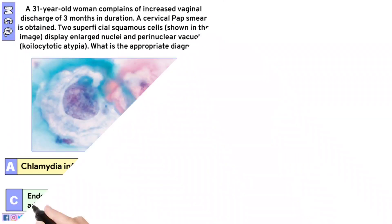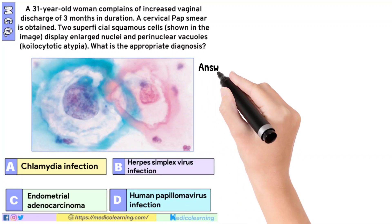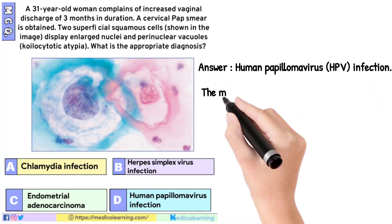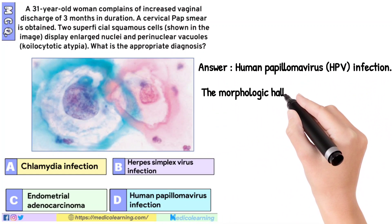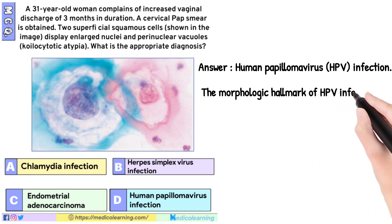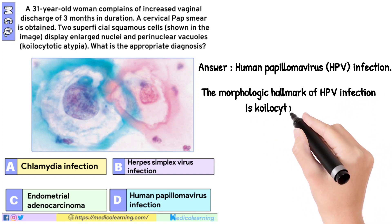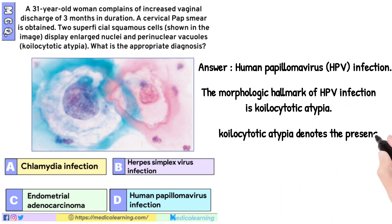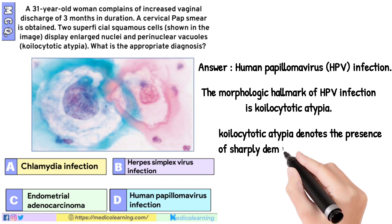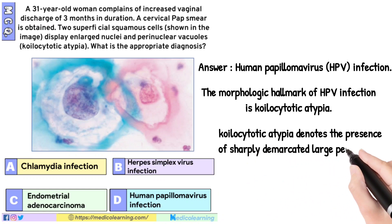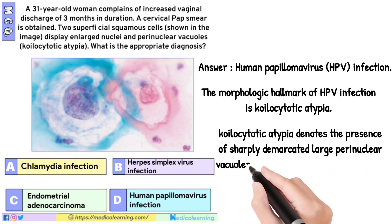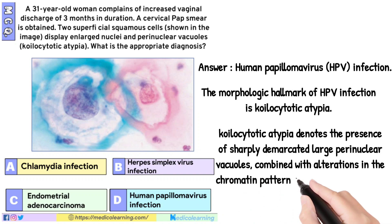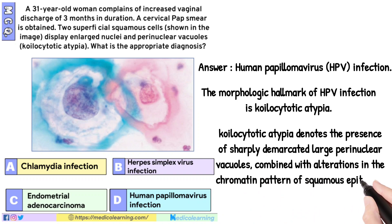In this question, the answer is Human papillomavirus (HPV) infection. The morphologic hallmark of HPV infection is koilocytotic atypia. Koilocytotic atypia denotes the presence of sharply demarcated large perinuclear vacuoles, combined with alterations in the chromatin pattern of squamous epithelial cells.